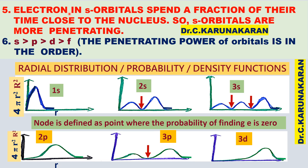Electrons in s orbitals spend a fraction of their time close to the nucleus, so s orbitals are more penetrating. The electrons are close to the nucleus and therefore have greater penetrating power. The ionization energy required to remove an electron from an s orbital is higher than from a p orbital. The penetrating power order is: s > p > d > f.